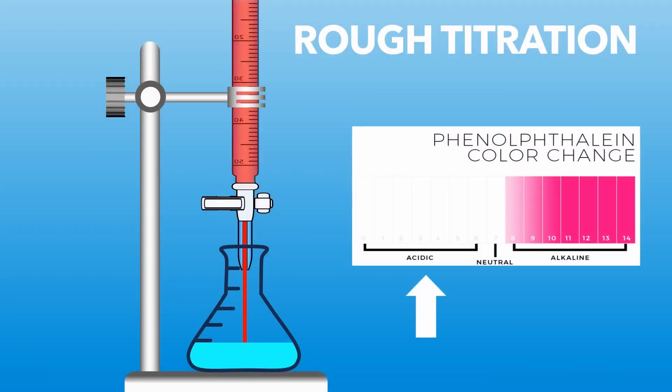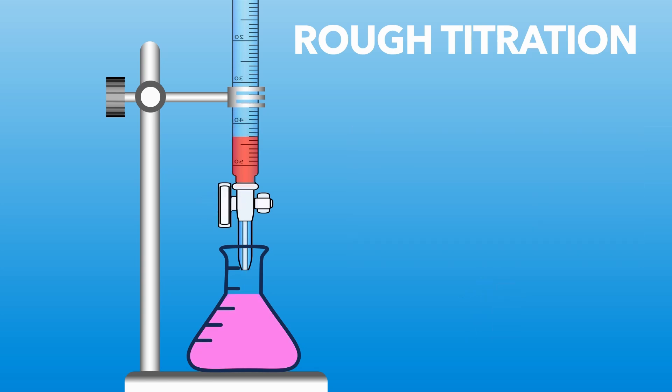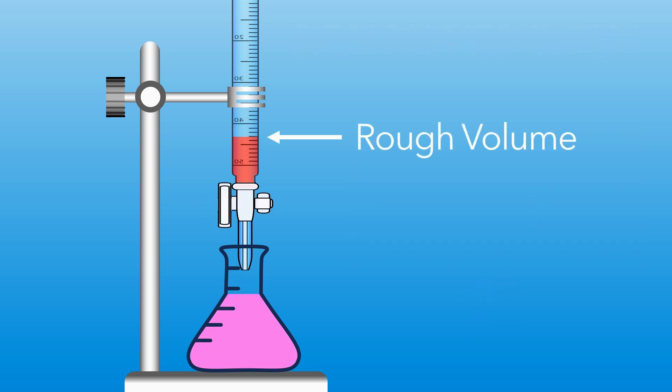Starting with a rough titration, we add the alkali from the burette until we see a colour change, showing that the acid has been neutralised. We take note of the rough volume for our accurate titration.